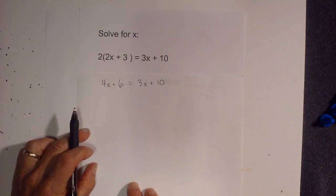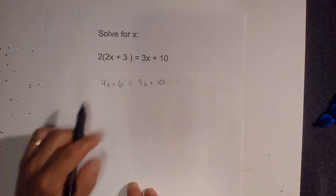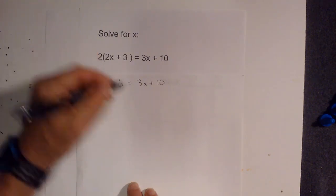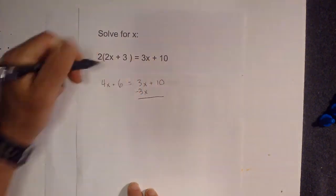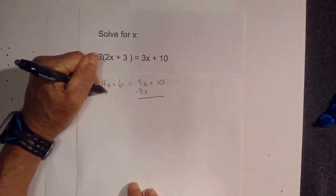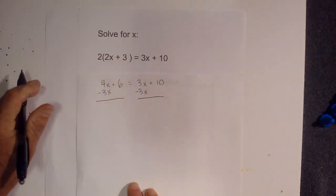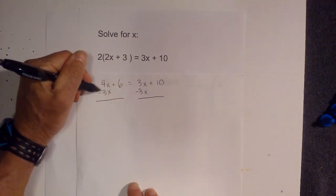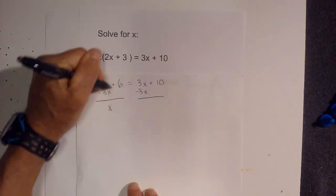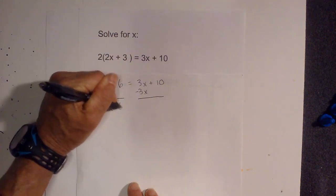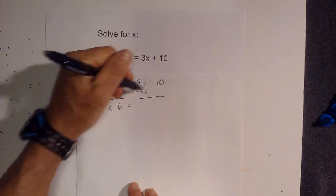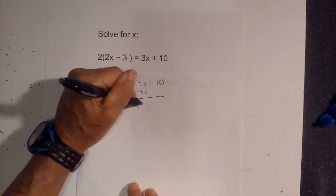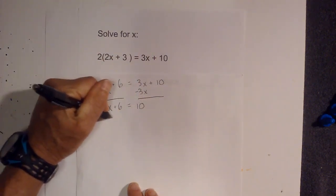Now I can subtract x's from each side and I can remove 3. So now I have 3x, subtract 3x there and 3x here. When I subtract 4 minus 3x equals x, I'm going to bring down the 6, equals 3 minus 3 is 0 so they cancel, so I'm going to bring down the 10. Now I can remove numbers.